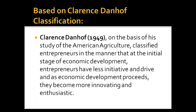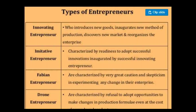The next classification is based on Clarence Danhoff. In 1949, Clarence Danhoff gave this classification based on his study of American agriculture. He classified entrepreneurs by noting that in the initial stages of economic development, people take less initiative and are less innovative. But as economic development proceeds, they become more innovative and enthusiastic. Four types have been given under this classification.